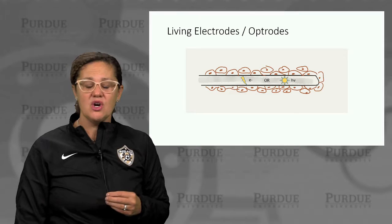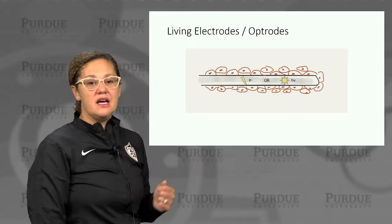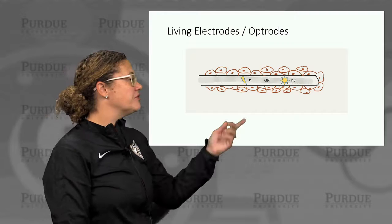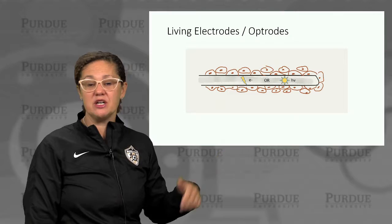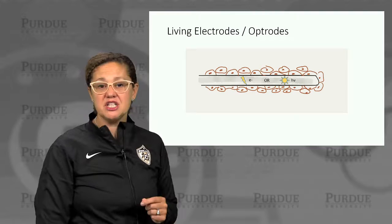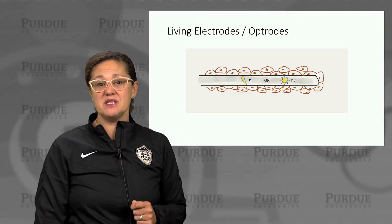We can take these cells — natural or engineered — and interface them to make a biohybrid device, integrating them with either an electrode carrying current for stimulating or measuring, or optrodes carrying light to excite cells or measure the light they produce. Integrating cells engineered as sensors or actuators with an electrode and/or optrode produces what is called a living electrode or living optrode. This allows us to control cell function as an actuator using current or light, and conversely measure the signal output from current or light produced by the cells acting as a sensor.